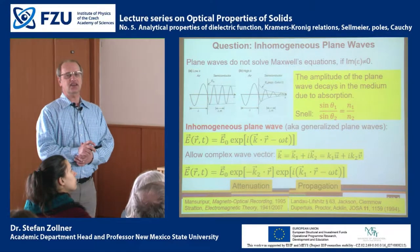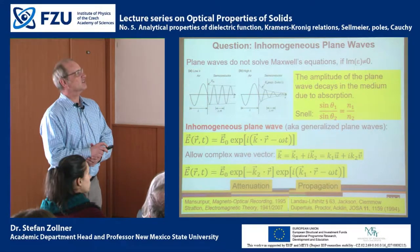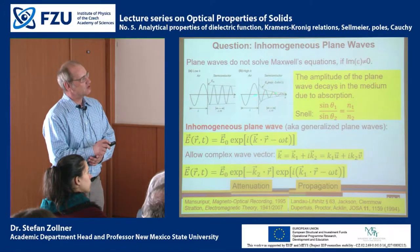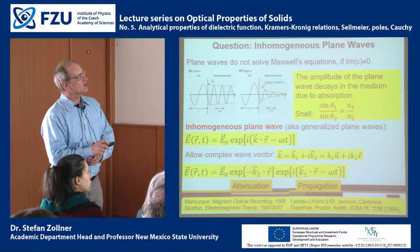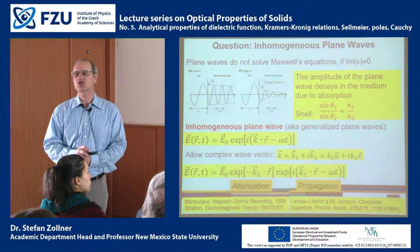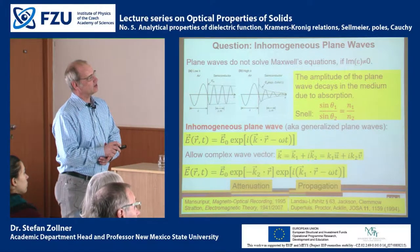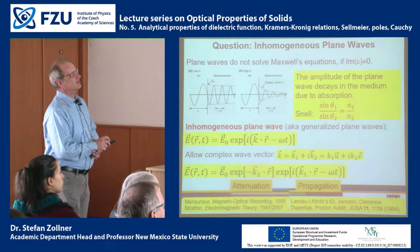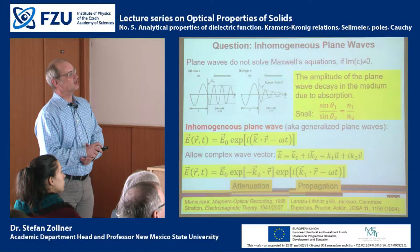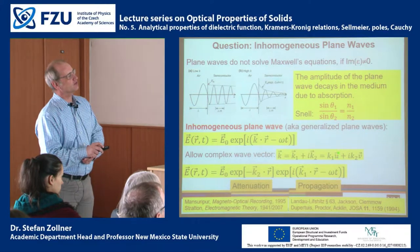A plane wave is not a solution to Maxwell's equations in an absorbing solid. In an absorbing medium, the amplitude and intensity of the wave decrease as it penetrates the solid. Therefore, we need a complex wave vector — the real part is responsible for dispersion and the phase, while the imaginary part is responsible for absorption. We can write this in terms of unit vectors u and v.